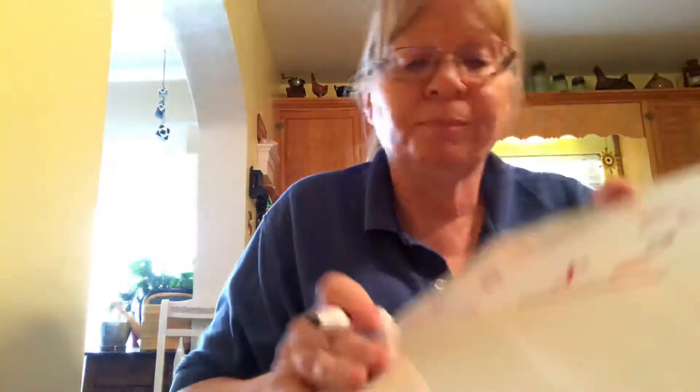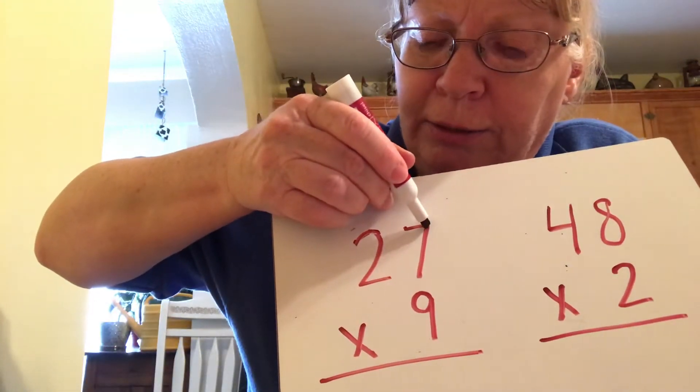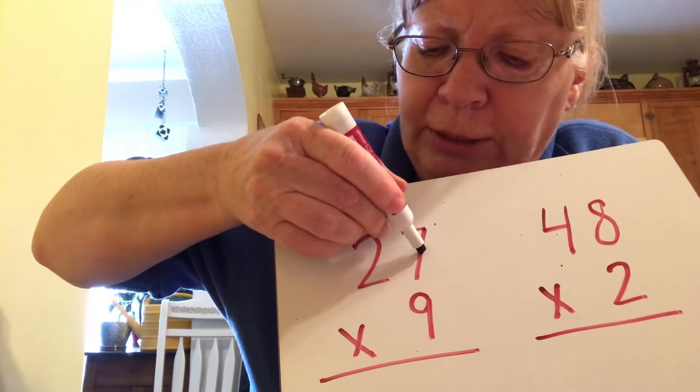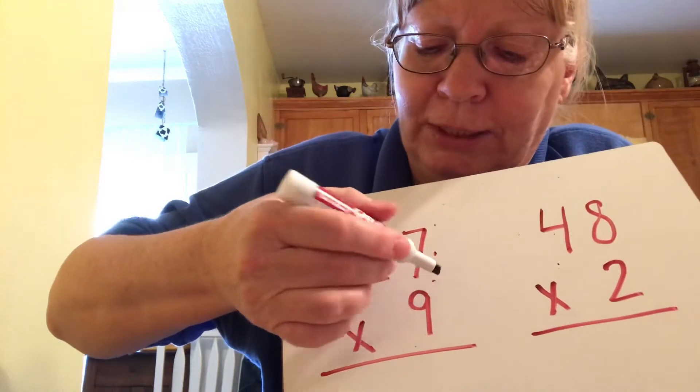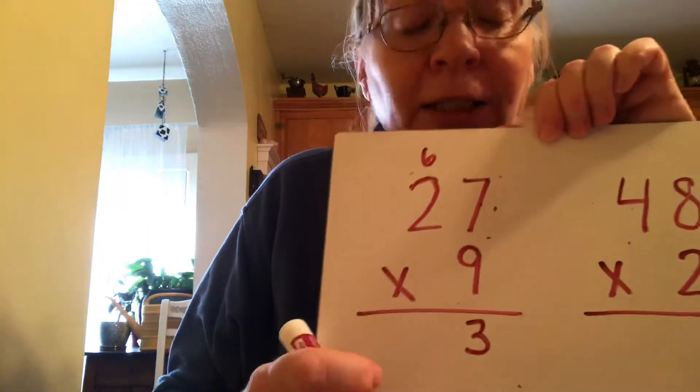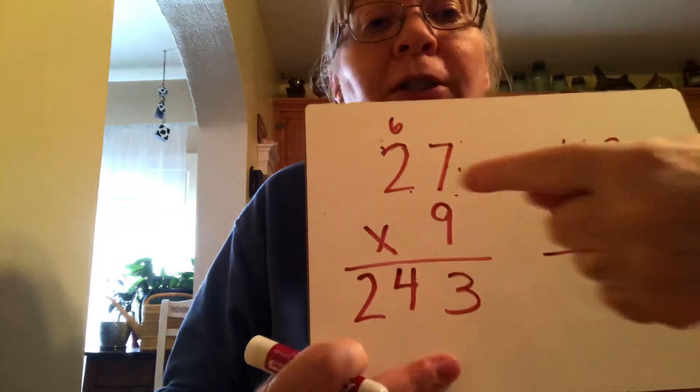I'm going to do two more with you and then the rest you'll be on your own. Next is 27 times 9 — 9 times 7: 9, 18, 27, 36, 45, 54, 63 — so we write the 3 down and carry the 6. Then 9 times 2: 9, 18, plus 6 is 24. So our answer is 243.